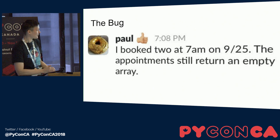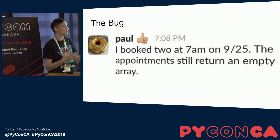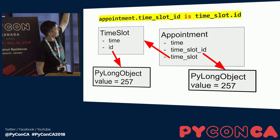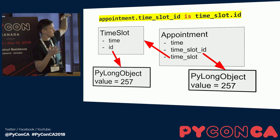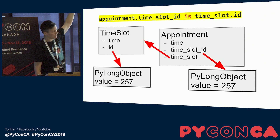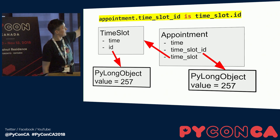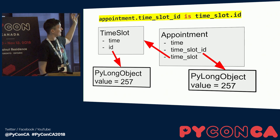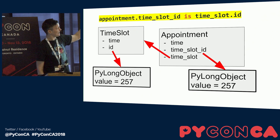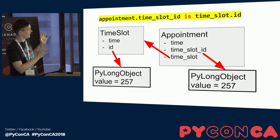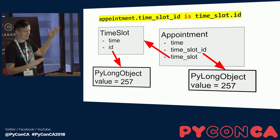Back to our bug. Paul booked two appointments, but they weren't showing up in the endpoint. What my code was doing was going through all the appointments and chunking them by time slot using an `is` condition. I was comparing the `time_slot_id` to `time_slot.id`. The appointment's `time_slot_id` had a different PyLong object on the heap than `time_slot.id`. So we're comparing two different PyLong objects — two different references — and of course `is` equated to false. This only happened with numbers greater than 256.